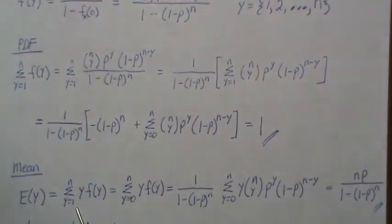Now the mean of Y is the sum over all possibilities: Y times its probability mass function. Notice that if we go from 1 to n, that's the same as if we go from 0 to n, because when Y is zero this is zero, so we're adding zero.